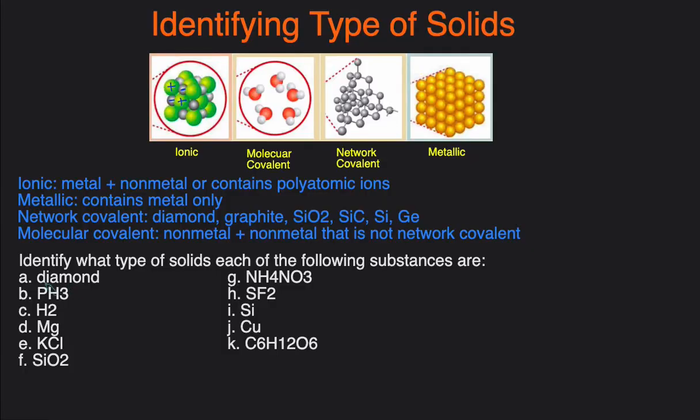Now let's go back to the examples. So the first one, diamond—well we just talked about it—diamond is a network covalent compound. That's one of the main ones, so this one will be network. Next one, PH3. P is a non-metal, H is also a non-metal, so this would be—since we have two non-metals that are not network covalent—this will be molecular covalent. H2, this is just two non-metals again, so this is also going to be molecular covalent because it's covalent but it's not network.